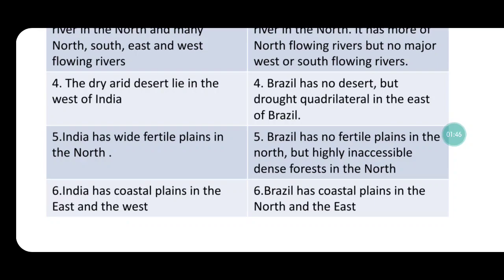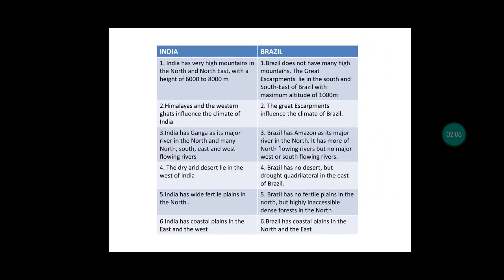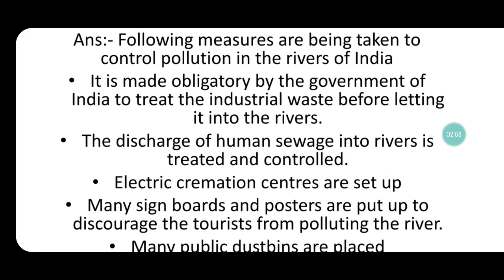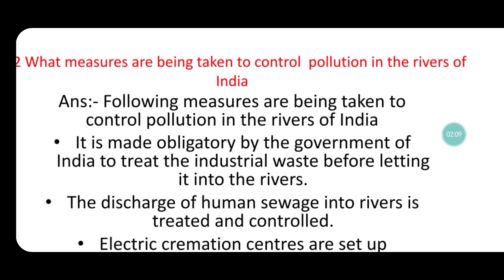India has wide fertile plains in the North. Brazil has no fertile plains but highly inaccessible dense forests in the North. India has coastal plains in the East and West extending 7500 kilometers. Brazil has coastal plains in the North and East comprising 7400 kilometers.